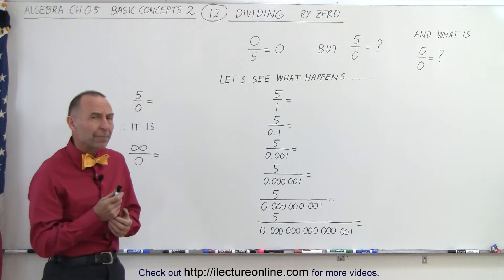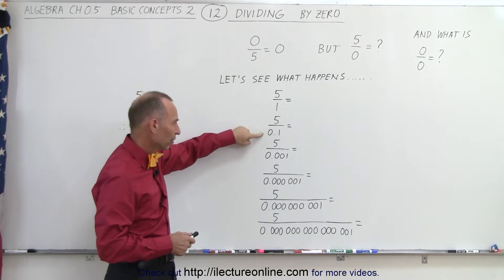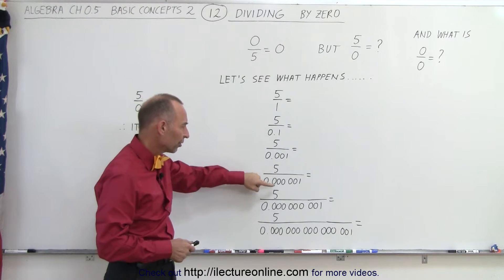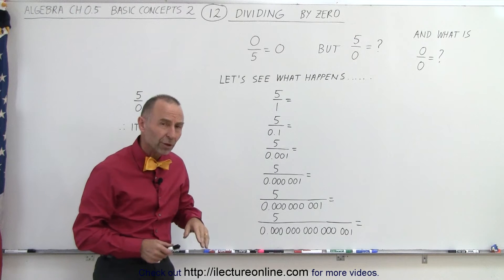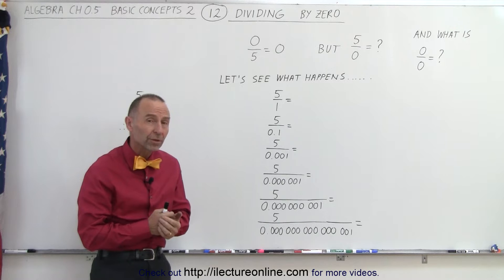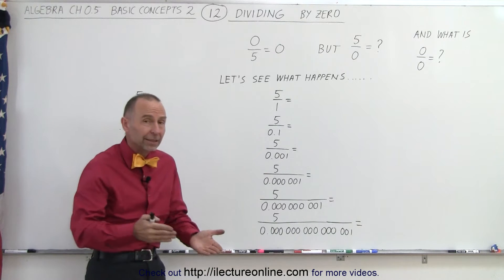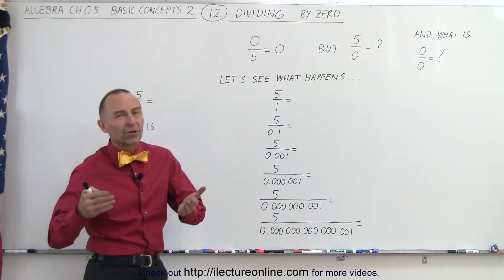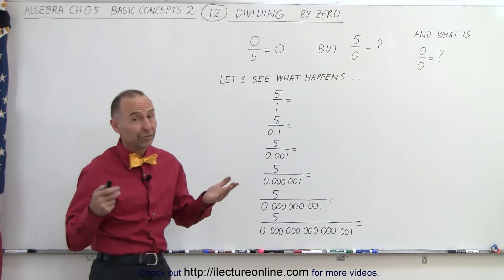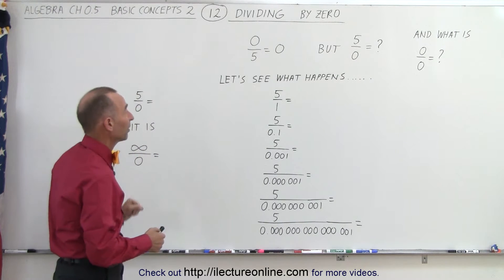Let's see what happens when we take a number like five and divide it by one, divided by 0.1, 0.001, 0.0000001, and so forth. In other words, we divide the number five by a smaller and smaller number. Eventually, if you make the number really small in the denominator, it will become zero. We should be able to see a pattern and figure out what to expect when we take five and divide it by zero.